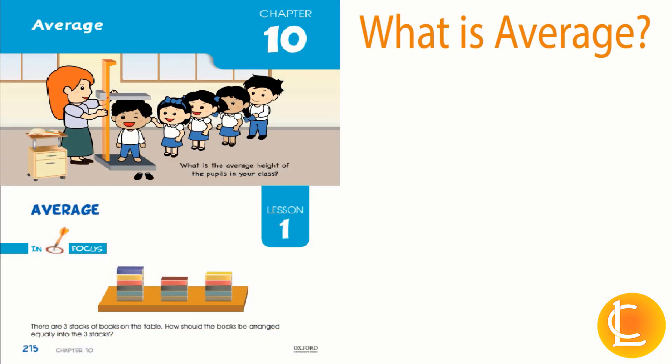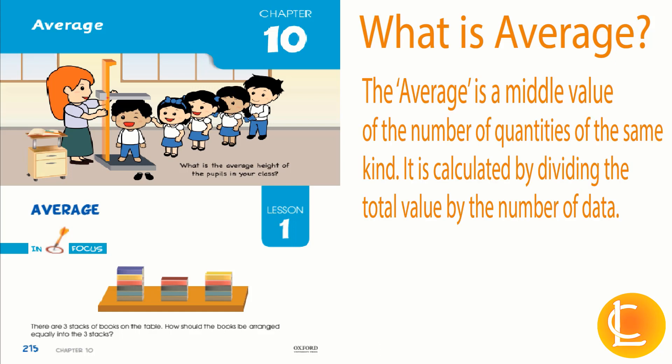So what is average? Do you know what is average? The average is a middle value of the number of quantities of the same kind. It is calculated by dividing the total value by the number of data.